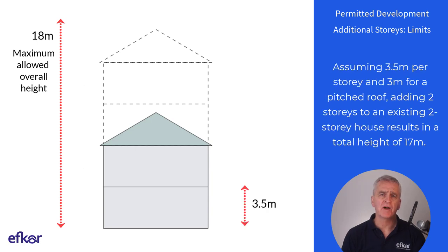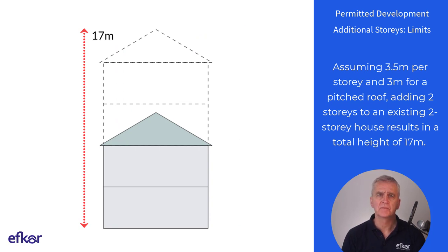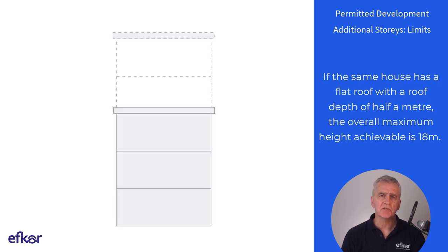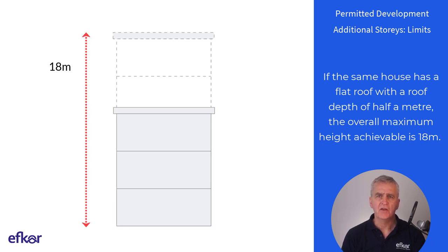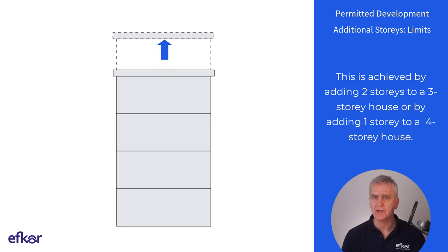Assuming 3.5 meters per story and three meters for a pitched roof, adding two stories to an existing two-story house results in a total height of 17 meters. The same height is achieved by adding one story to an existing three-story house. If the same house has a flat roof with a depth of half a meter, the overall maximum height achievable is 18 meters, achieved by adding two stories to a three-story house or by adding one story to a four-story house.